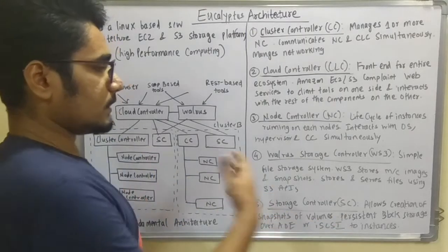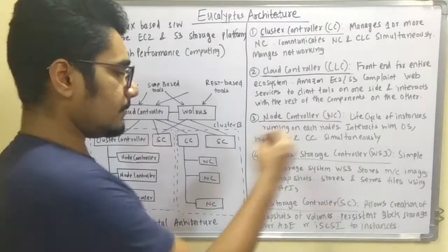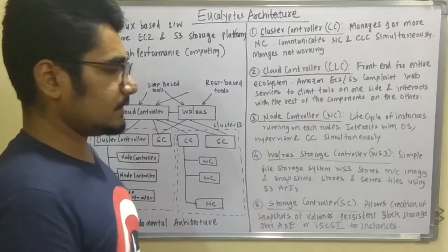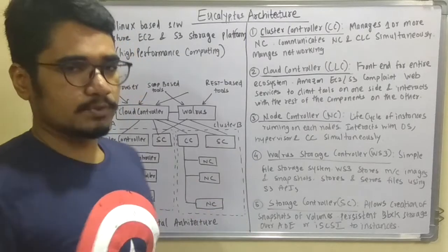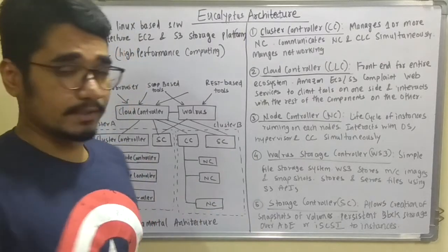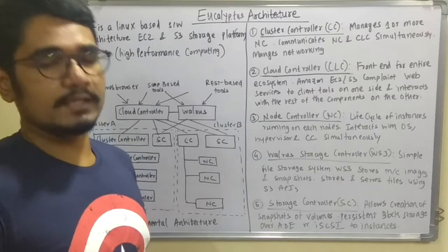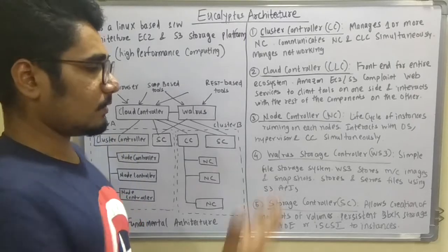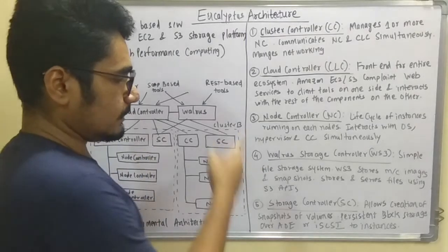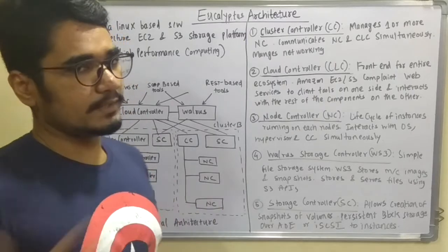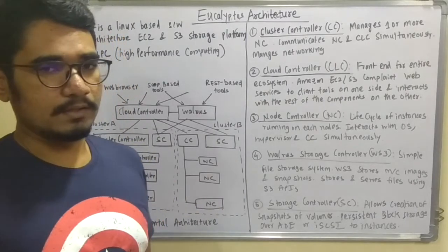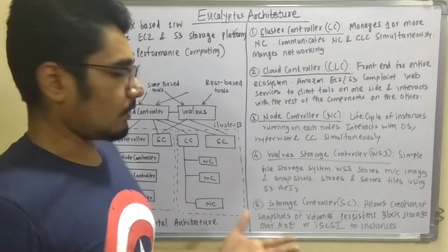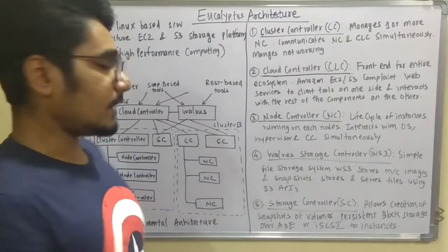Next is the Walrus Storage Controller (WS3). It is the simplest file storage system and is used primarily for creating machine images and snapshots. Snapshots and machine images are mainly used for creating checkpoints — if a disaster occurs in the architecture and you need to recover, those snapshots or machine images are used for recovery purposes. It stores and processes all files and handles S3 API operations as well.